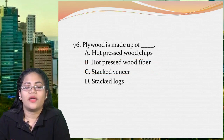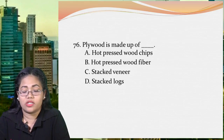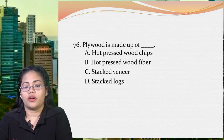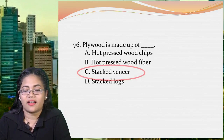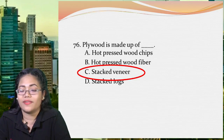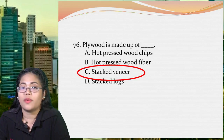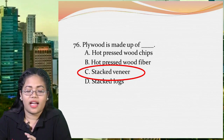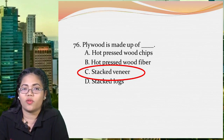Next: plywood is made up of what? A: hot pressed wood chips, B: hot pressed wood fiber, C: stock veneer, or D: stock logs. The answer is C, stock veneer. Veneer is a thin slice of wood, and plywood is a sheet material manufactured from thin layers of wood veneer. Pressed wood — like wood chips and wood fiber — is made of wood shavings, particles, and fibers. Logs are felled trees, generally rough pieces of wood that have not yet undergone manufacturing.